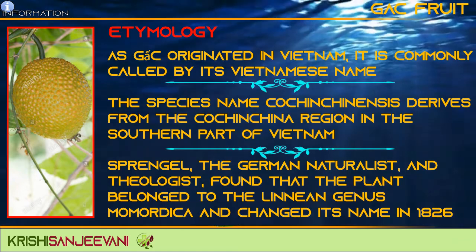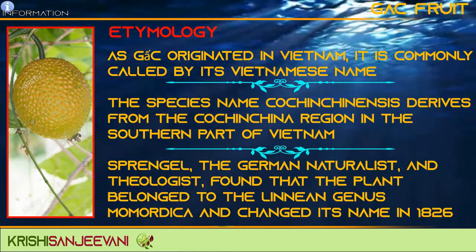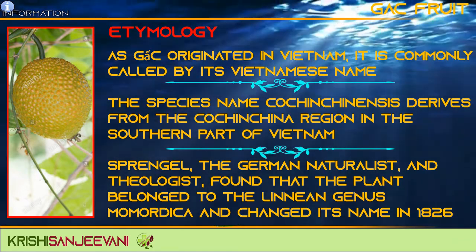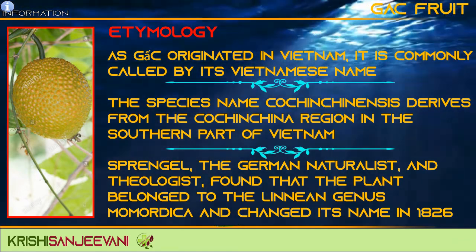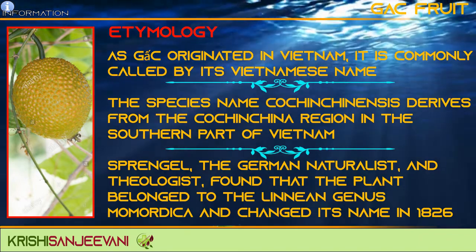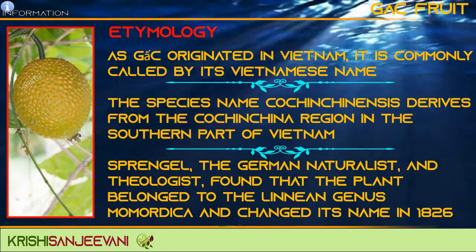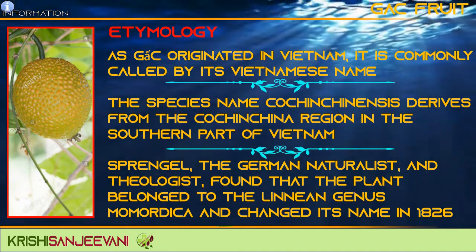Sprengel, the German naturalist and theologist, found that the plant belonged to the Linnaean genus Momordica and changed its name in 1826.